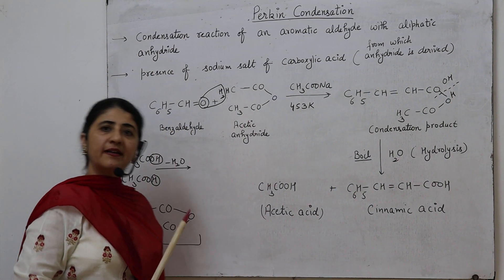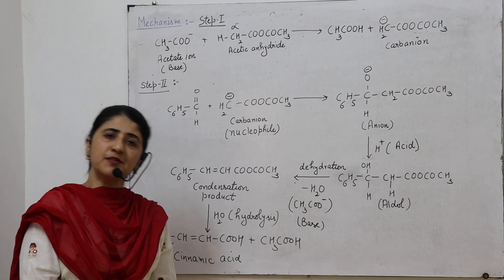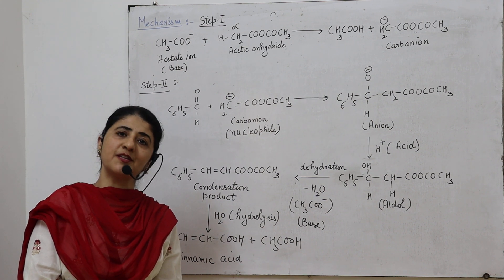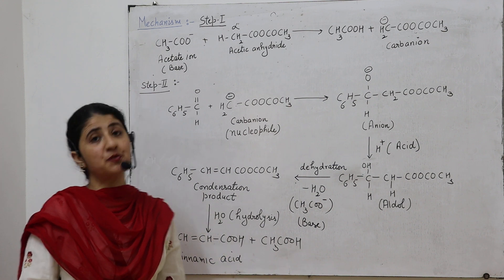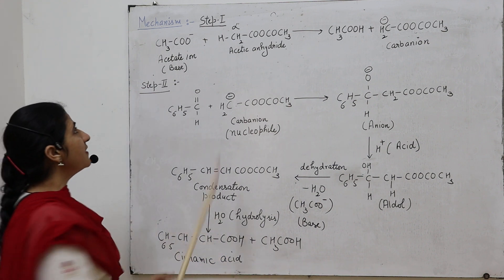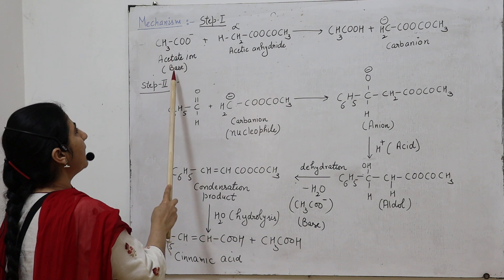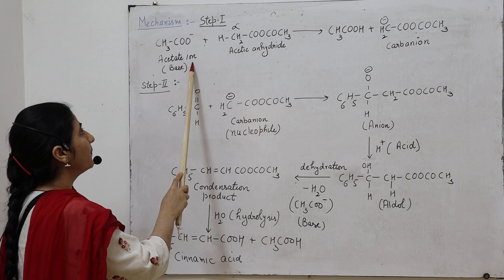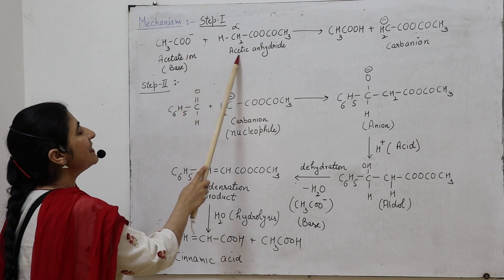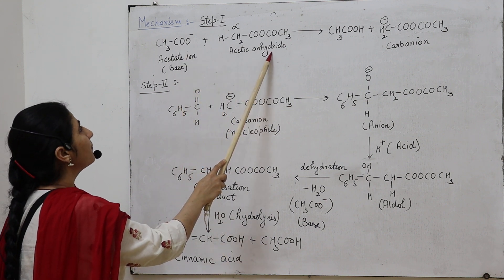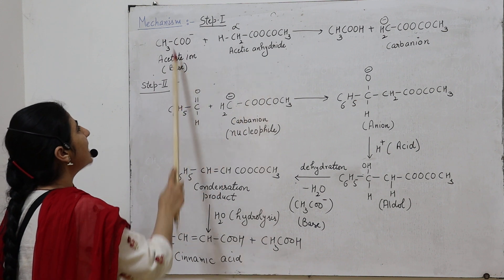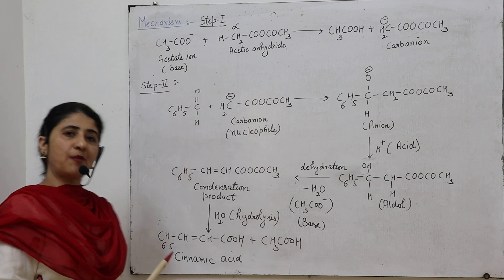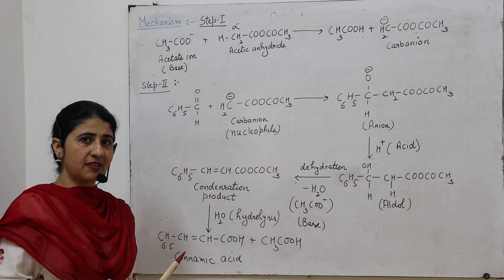Next we will study the mechanism of Perkin condensation — how it actually takes place. It takes place in two steps. In the first step, the carbanion, that is the acetate ion produced from sodium acetate, reacts with acetic anhydride. The acetate ion acts as a base, meaning it abstracts the H⁺ ion, as it has the tendency to combine with a positive hydrogen ion.